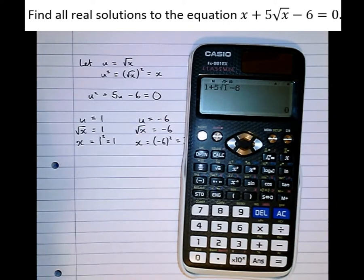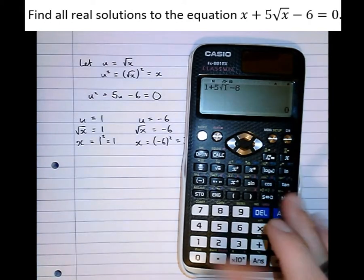that equation at the top there. Okay, x plus 5 root x minus 6 equals 0, it does indeed equal 0.